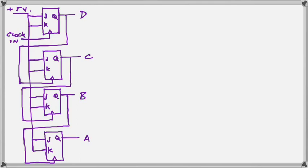So essentially, each flip-flop divides the input clock pulse by 2. So this is exactly what we want for a counter that counts in binary.